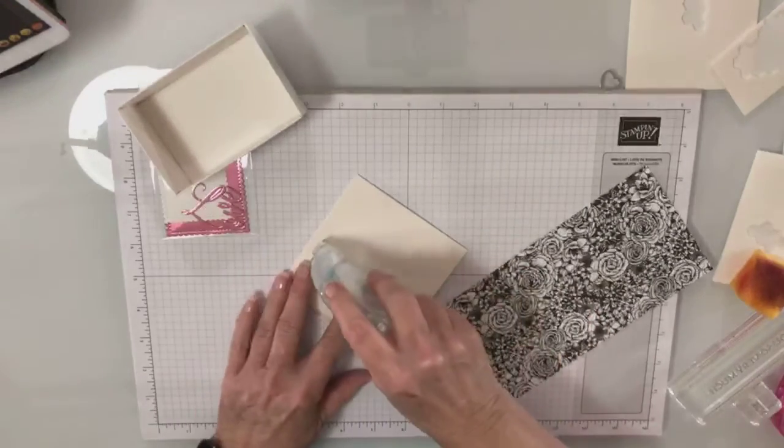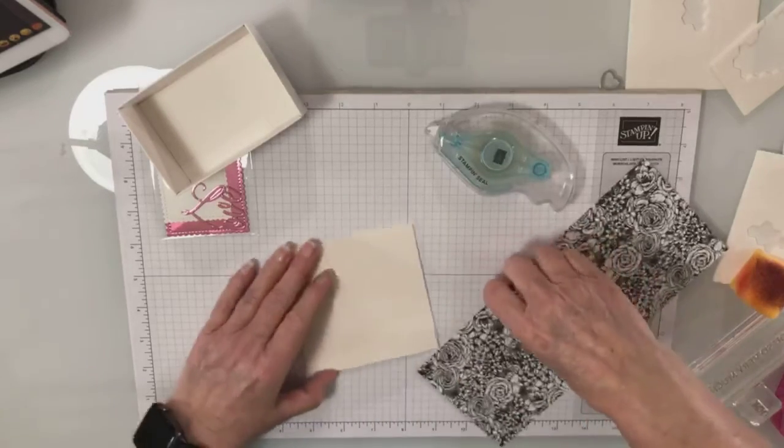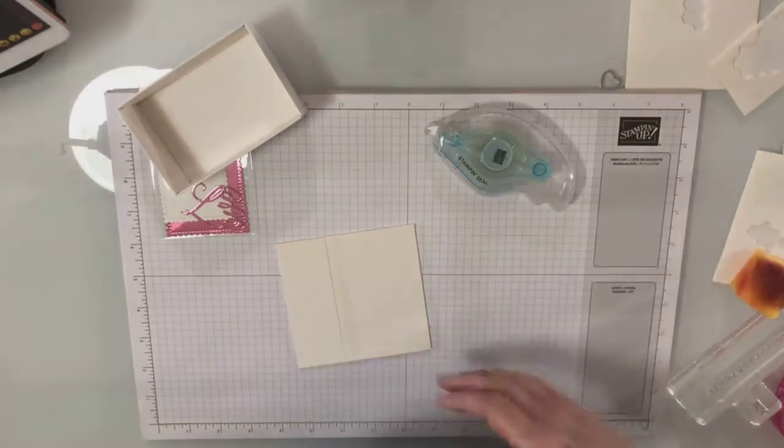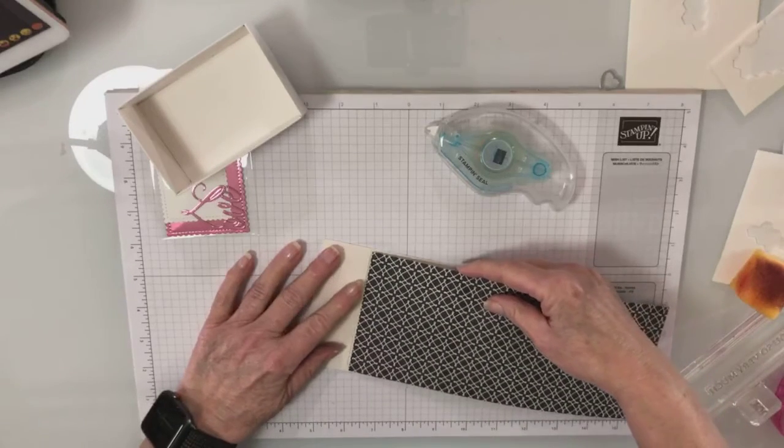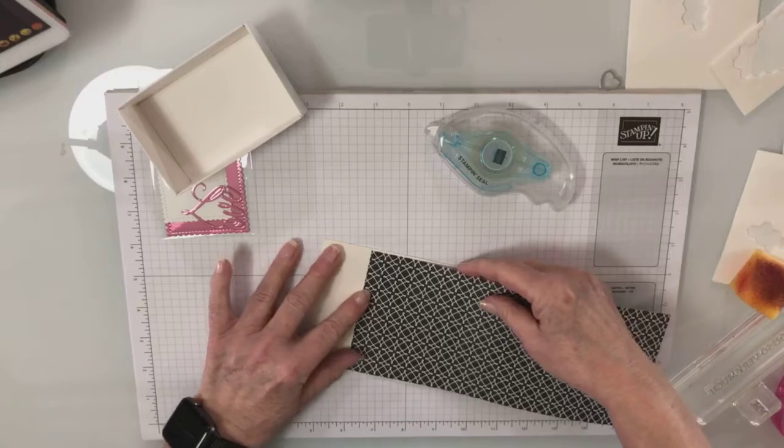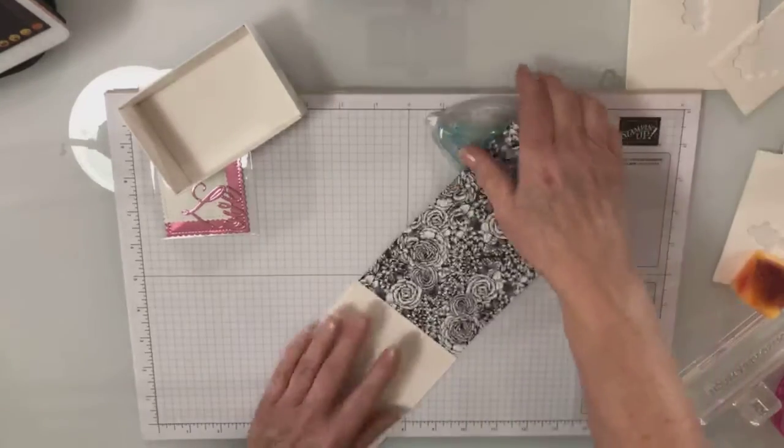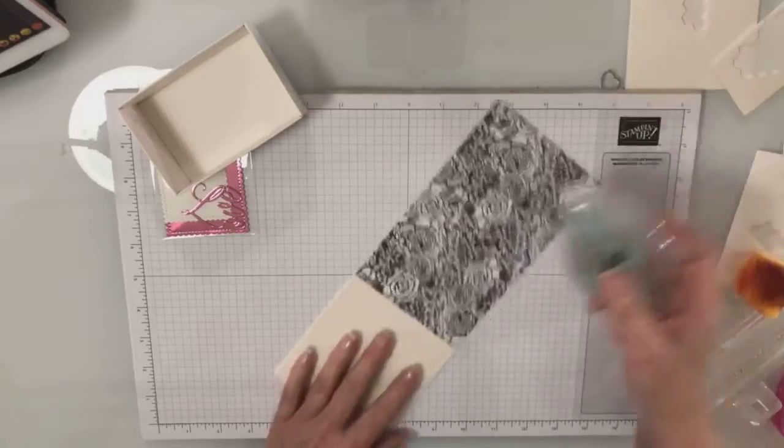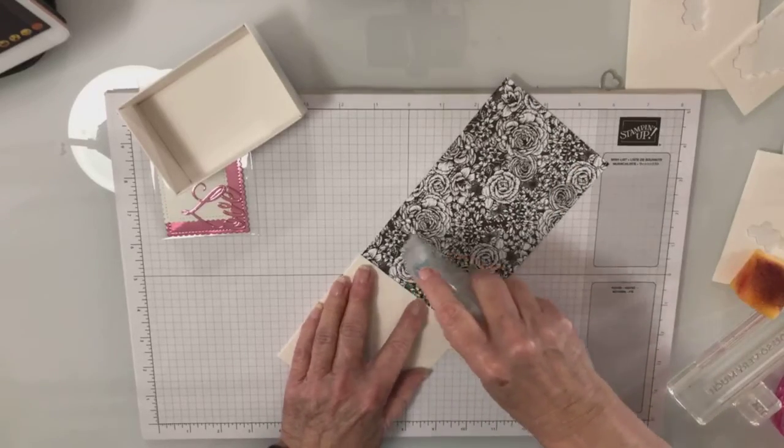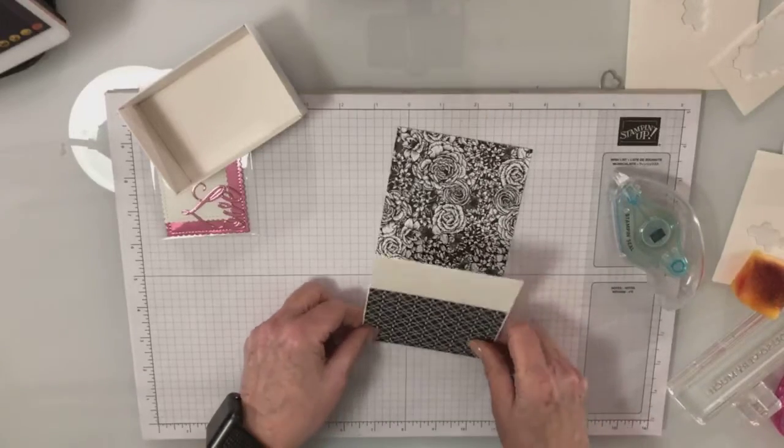We're going to take that and we're just going to put some adhesive on it. I'm going to start out with my adhesive on my box. I'm not going to go all the way across because I know that this piece of paper isn't going to fit all the way across. I want to butt that right up to that fold line that's there. Now I can put my adhesive on my paper and I'm just going to go about here.